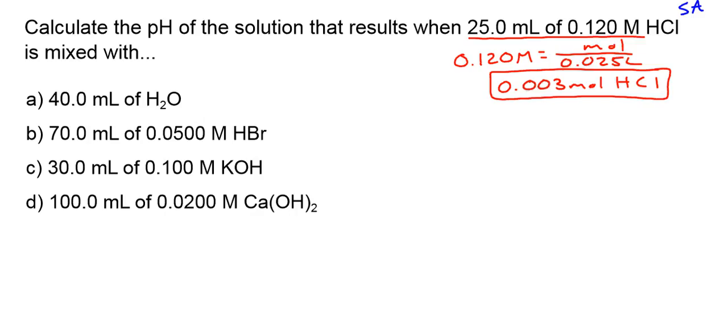So what I really have then if we look at this first problem - and again it's always moles over liters, keep thinking about that - I have my moles over my total volume. So I have 0.025 plus 0.040 liters. I'm adding the 40 milliliters to my 25 milliliters.